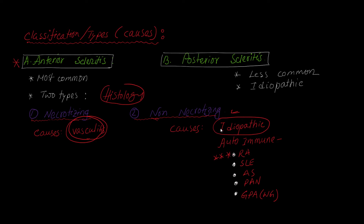There are several causes of scleritis. The main cause of necrotizing scleritis is vasculitis. For non-necrotizing scleritis, rheumatoid arthritis is the number one and most important cause. There are also many autoimmune causes, including SLE, ankylosing spondylitis, PAN (polyarteritis nodosa), and GPA (granulomatosis with polyangiitis) — which involves granuloma formation with inflammation of multiple small vessels. GPA was previously known as Wegener's granulomatosis.